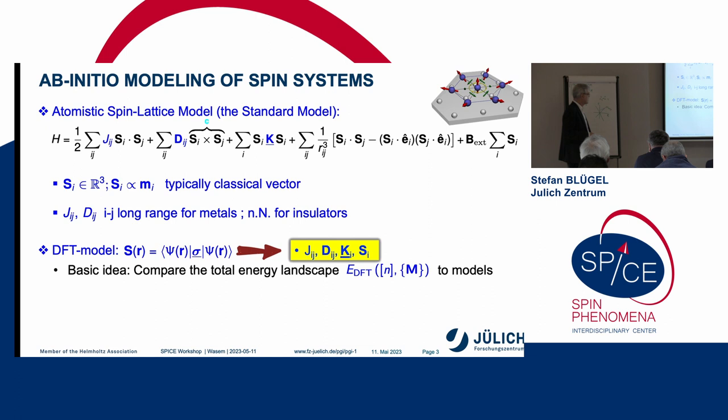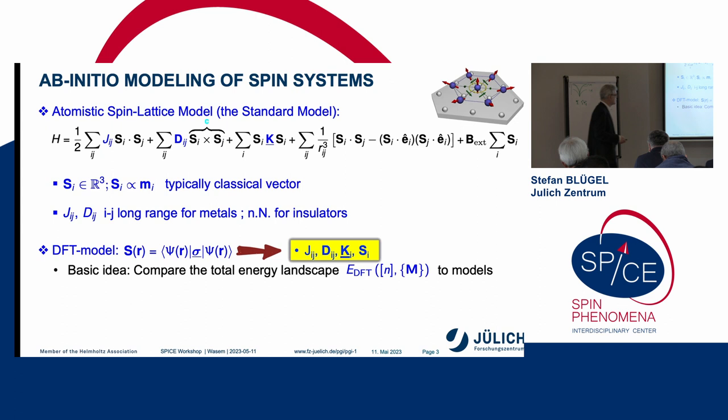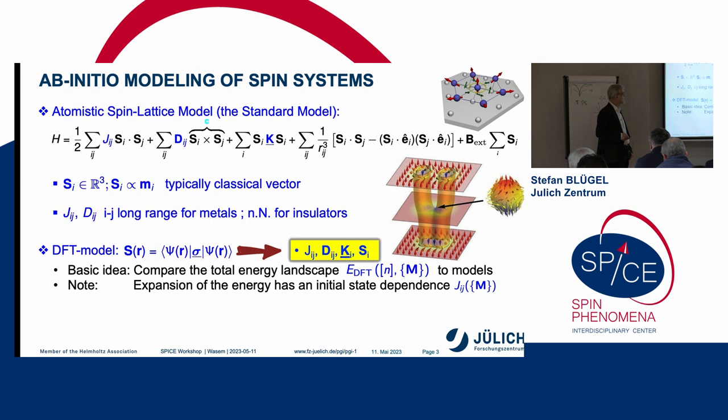And if you want to relate it to a real material, typically you try to get these parameters J, D, K, and S from first principles calculations. And basically, we have many tricks how to get these parameters. For example, you can get these parameters by calculating an energy landscape and fitting your model to this energy landscape. I would like to remind you though, that if you look very carefully, you have some initial state dependence.